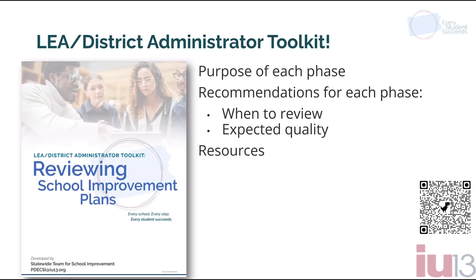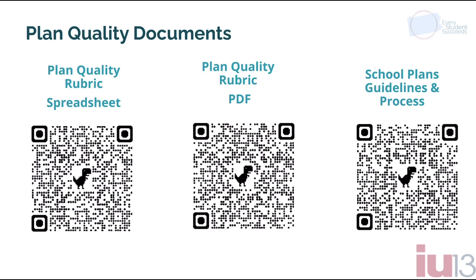Most of what I share today is from this District Administrator Toolkit. This toolkit supports leaders by providing a purpose for each phase of the improvement planning process. It shares expectations for the quality of each phase and it provides links to resources. You can find additional guidance for quality plans at each of these QR codes. The rubric is in both spreadsheet and PDF format, and on the right is a document that provides guiding questions for each phase of the improvement planning process along with the expectations for high quality plans.